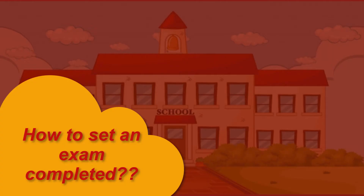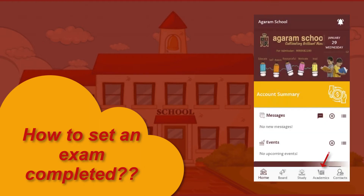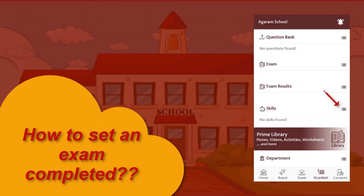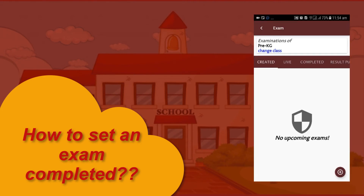Hi everyone. In today's video, we help you learn how to set an exam as completed. Open the Learner Grow school application, click the Academics tab on the screen. In the Exam section, click the List button, then click on the Change Class link to choose the class.